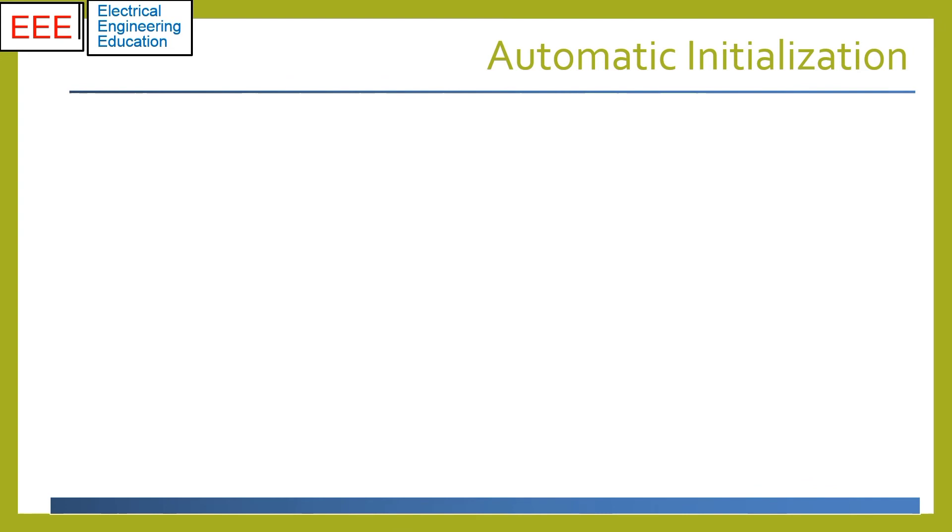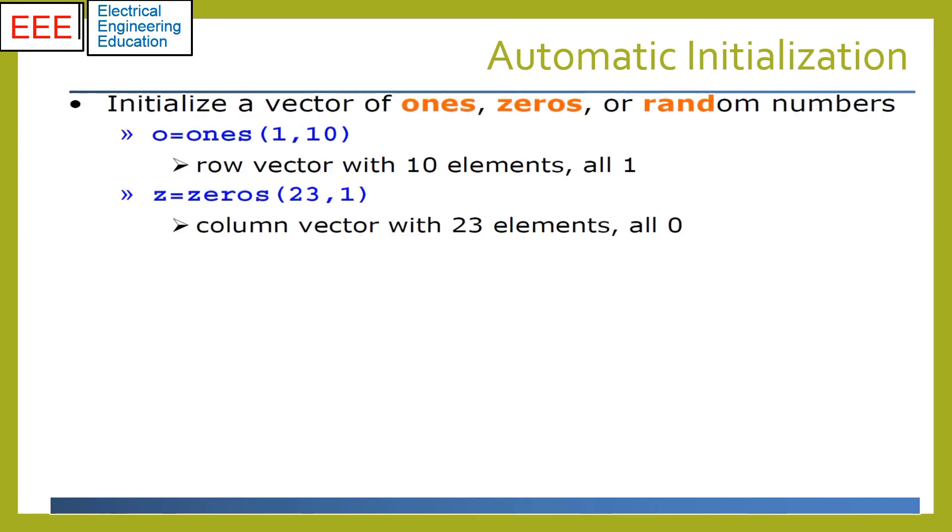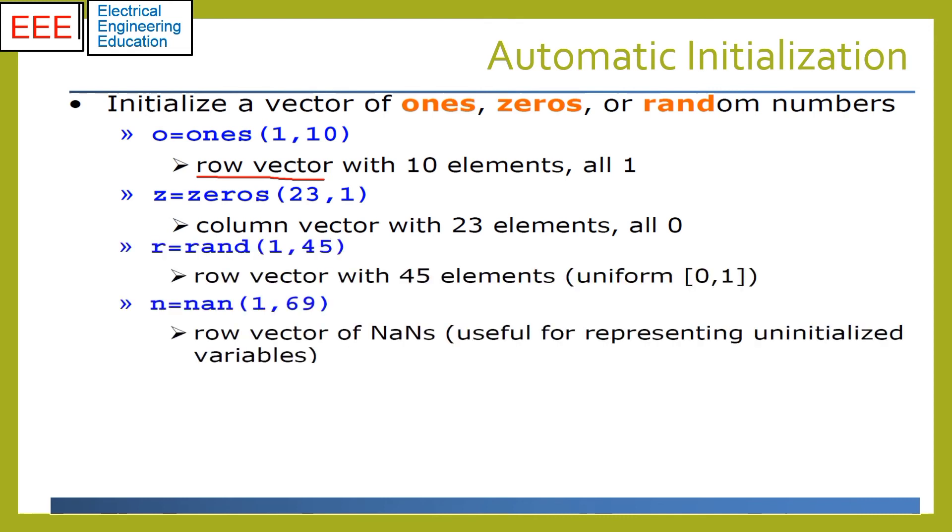MATLAB provides many built-in functions for automatic initialization including initialization with zeros, ones, uniform and normal random numbers, not a number and so on. Initializing helps in pre-allocation of memory, thus speeding up computations. Using a particular function is dependent on application. For example, rand is used for bitstream generation and randn for additive white Gaussian noise generation in applications of communication, control, and machine learning.